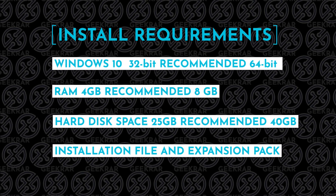Before we get started, we're going to go over the installation requirements. There are a few things you're going to have to have on your PC, which is Windows 10. 32-bit is recommended, 64-bit is going to be best. For RAM, at least 4 gigs, but we definitely recommend 8. Hard disk space, a minimum of 25 GB — 40 is going to be best. And of course, you're going to need the installation files and expansion pack. All of them are listed in the description below, so you can go ahead and download those and we can begin with the installation.